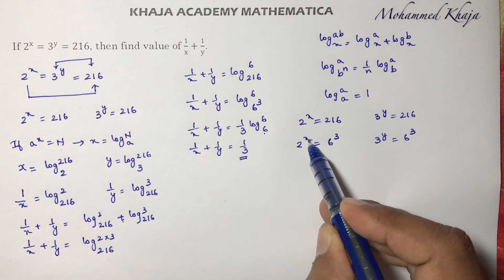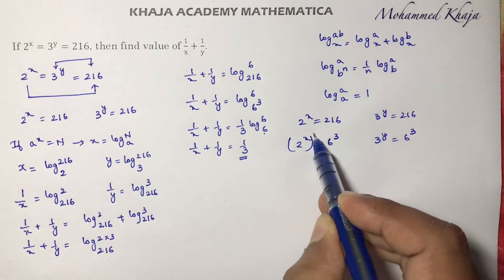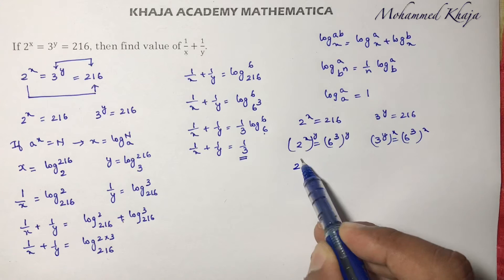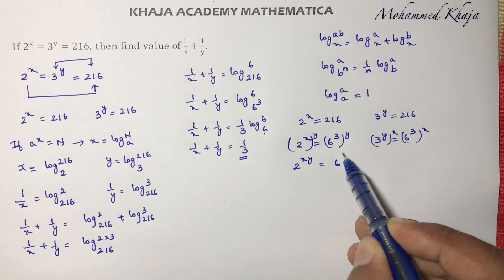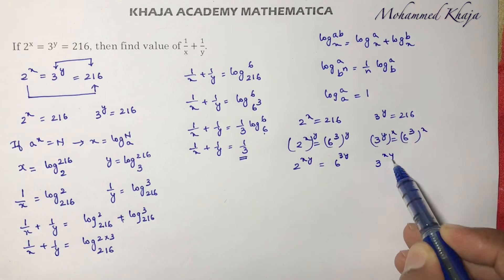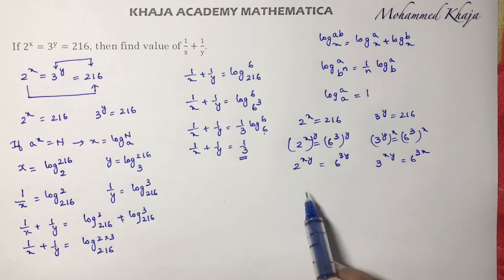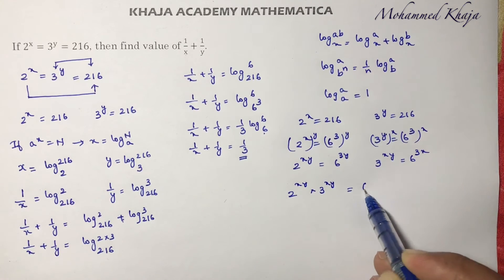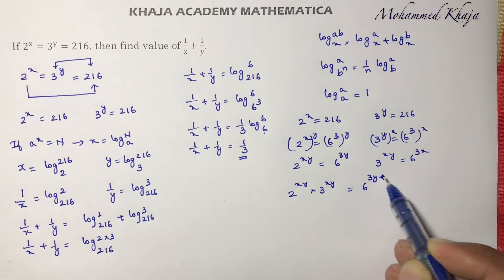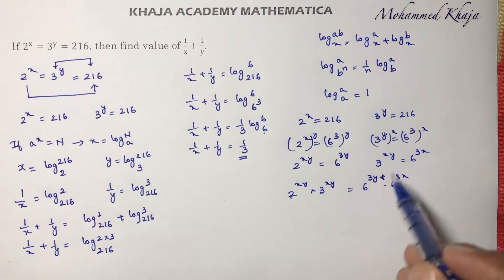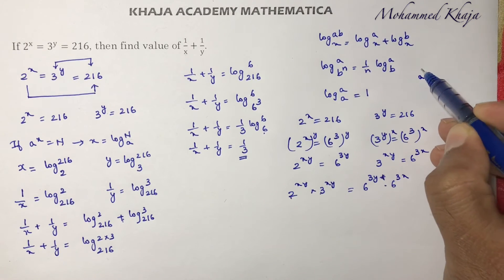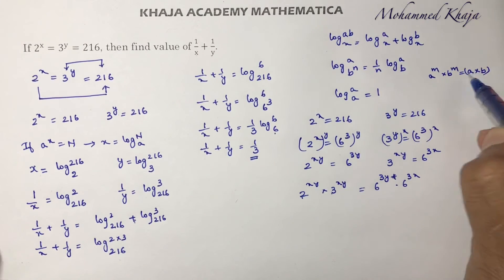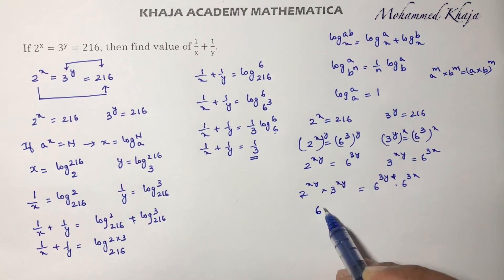Now apply whole power y to the first equation and whole power x to the second equation on both sides. This gives 2 power xy equals 6 power 3y, and 3 power xy equals 6 power 3x. Now multiply both equations: 2 power xy into 3 power xy equals 6 power 3y into 6 power 3x. Using the law a power m into b power m equals a into b whole power m, we get 6 whole power xy.